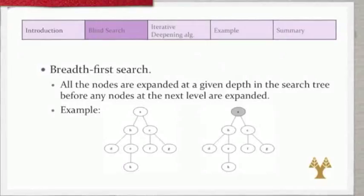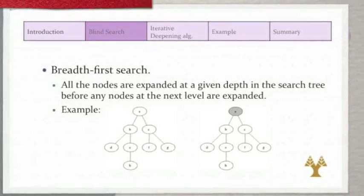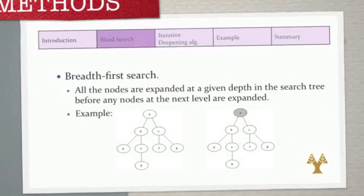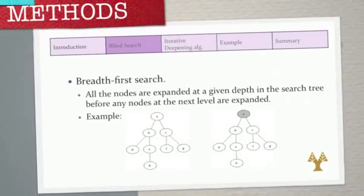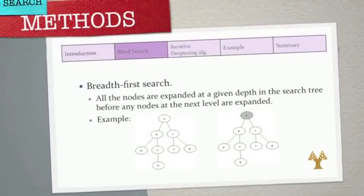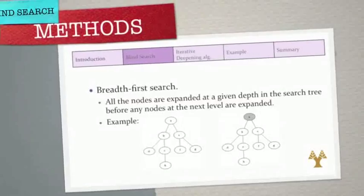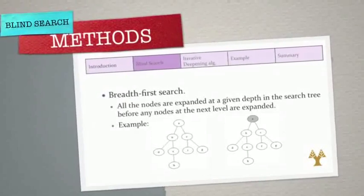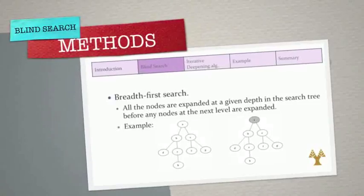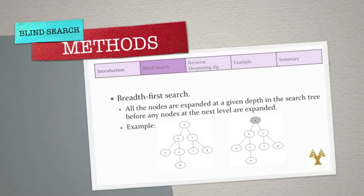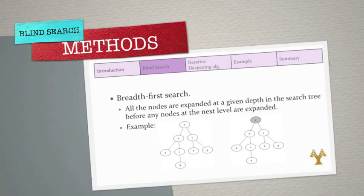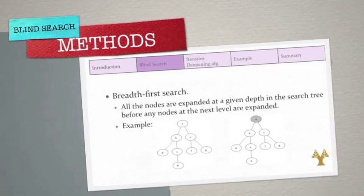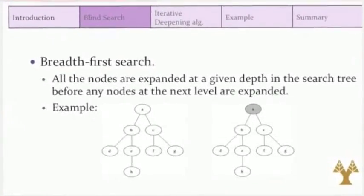Breadth first search is a simple strategy in which the root node is expanded first, then all the successors of the root node are expanded next, then their successors, and so on. In general, all the nodes are expanded at a given depth in the search tree before any nodes at the next level are expanded. Here we can see an example.